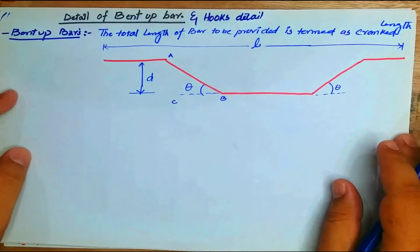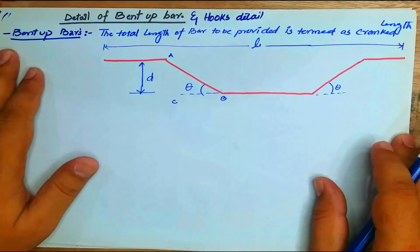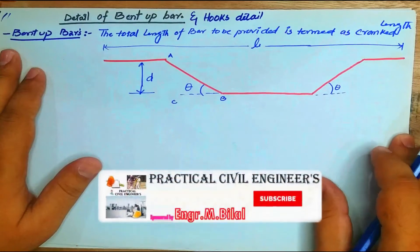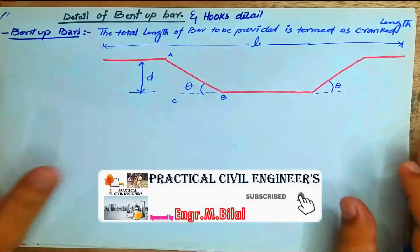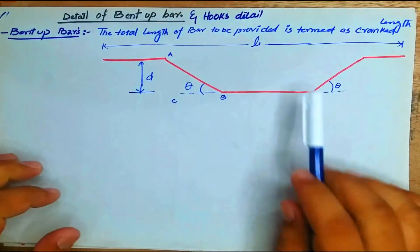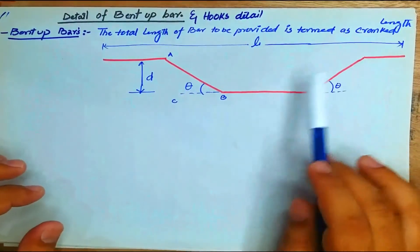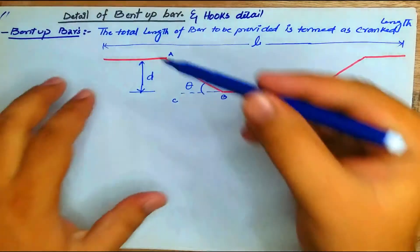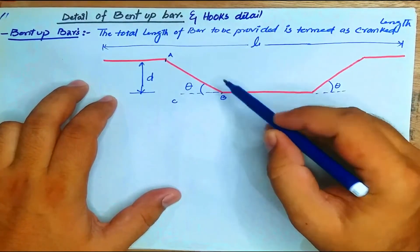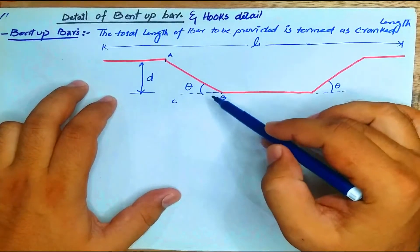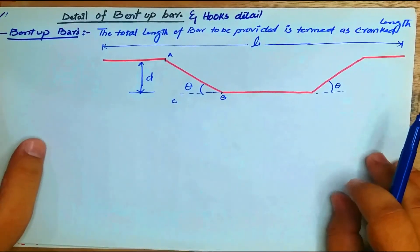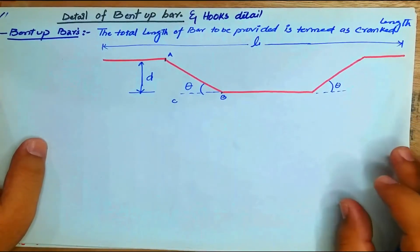The first topic is the bend-up bar. A bend-up bar means the total length of a bar to be provided, also termed as a cranked bar. The length from point A to point B is called the crank length.